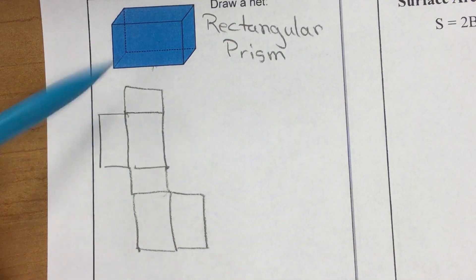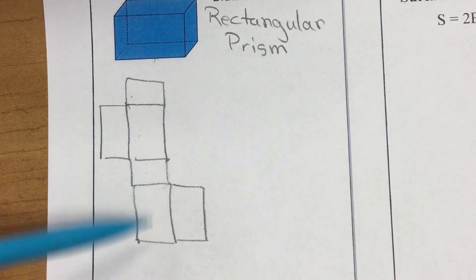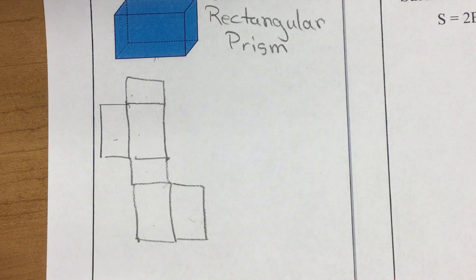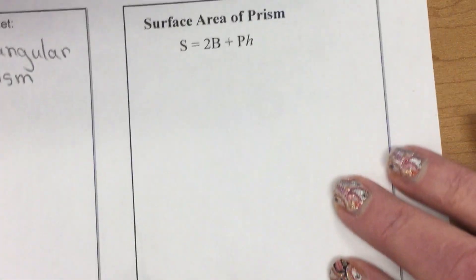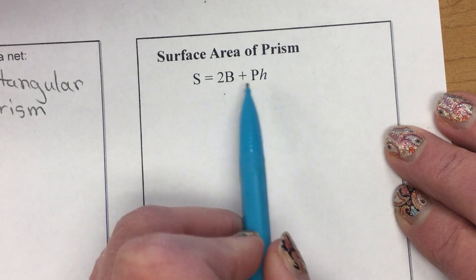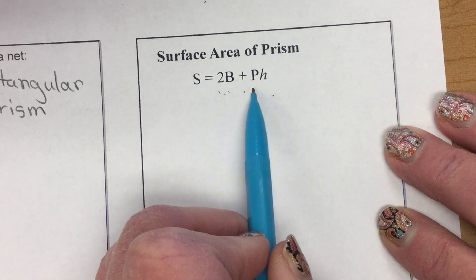So I could find the surface area by cutting it apart, measuring, and finding all six faces and adding them up. That would be a lot of work. Or I could use a formula, which says the surface area of any prism is 2B plus pH.